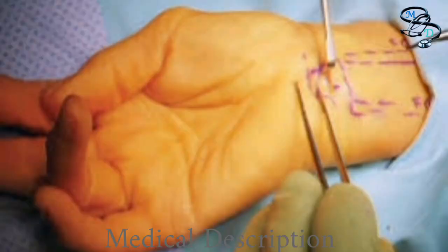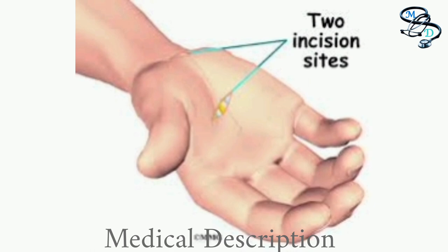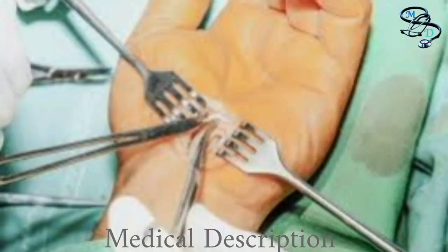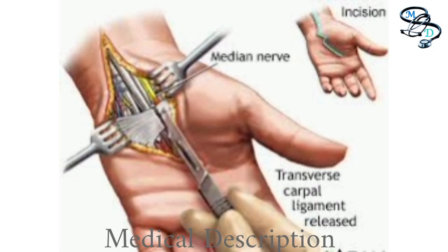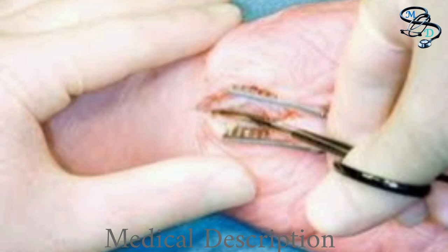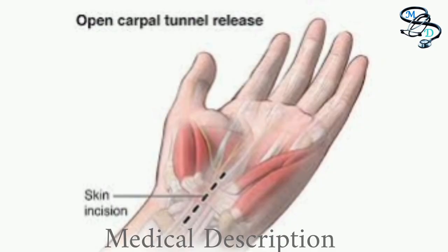In open surgery, the surgeon makes an incision in the palm of the hand over the carpal tunnel and cuts through the ligament to free the nerve. Discuss the risks and benefits of each technique with your surgeon. Surgery risks may include incomplete release of the ligament, wound infection, scar formation, and injuries to nerves or blood vessels. During healing, the ligament tissue gradually grows back together while allowing more room for the nerve — a process that typically takes several months, though the skin heals in a few weeks.